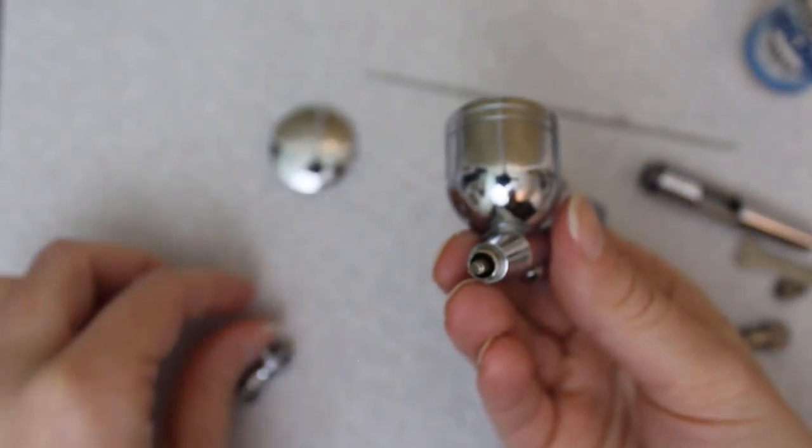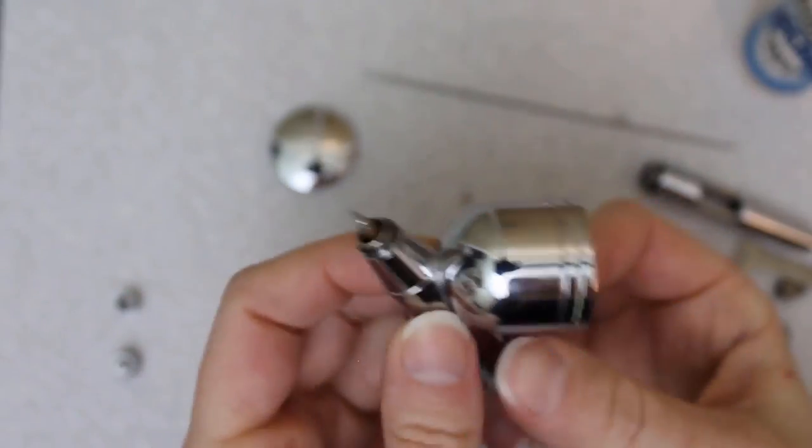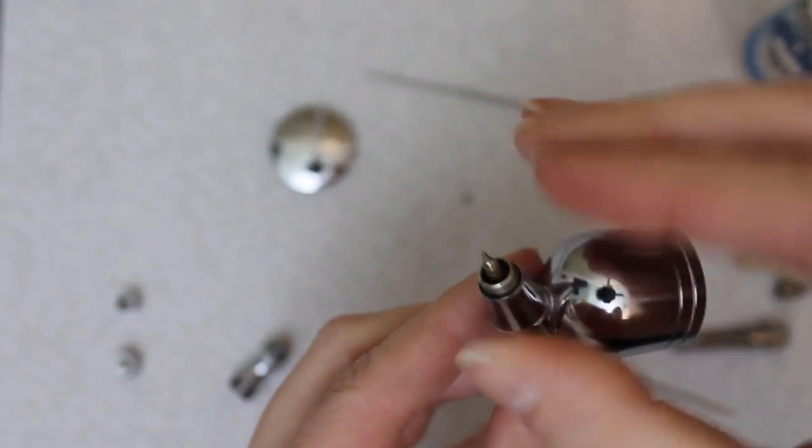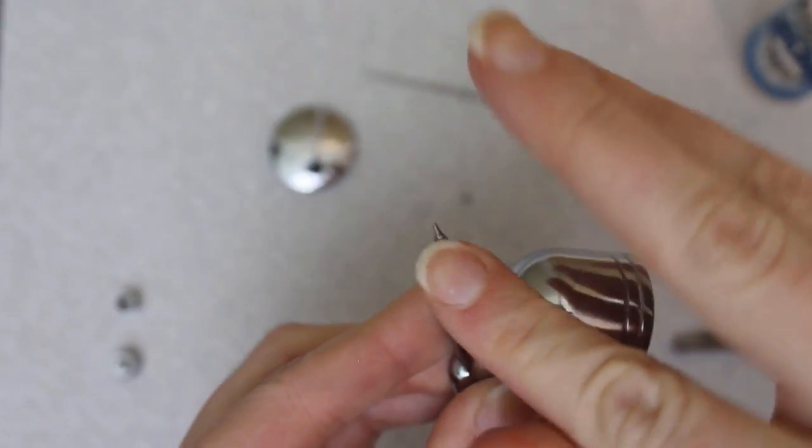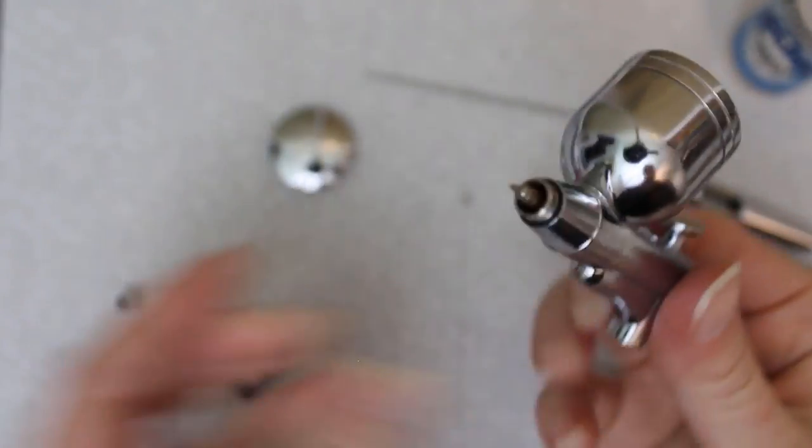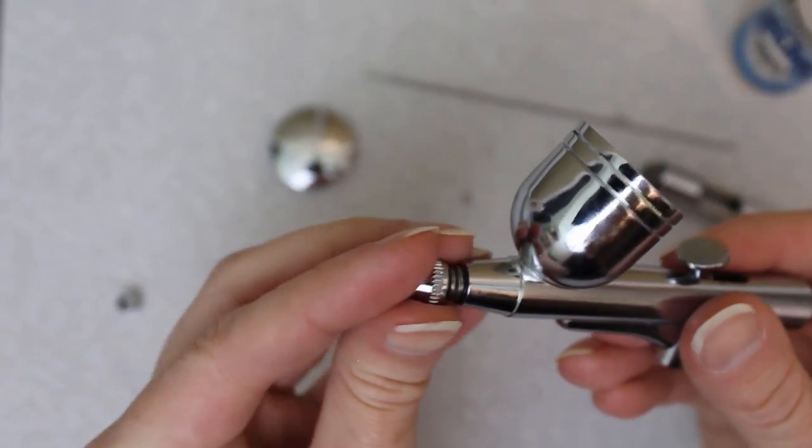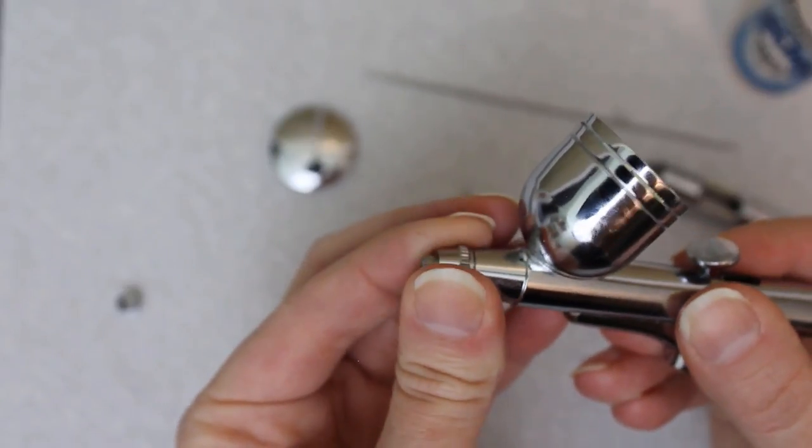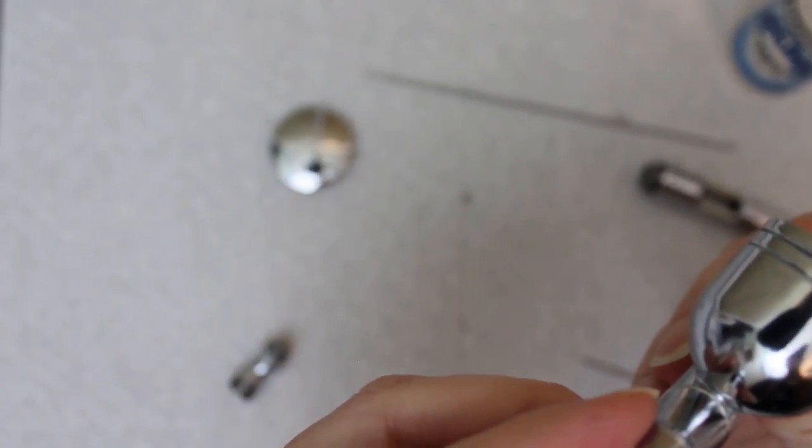The next thing to go on is the rubber o-ring for the air cap. Make sure this is lubricated too. It helps keep the rubber from drying out and breaking. Breakage means air leaks, which impacts airbrush performance. Then the air cap screws on. My nozzle has some paper towel fuzzies on it. There we go.